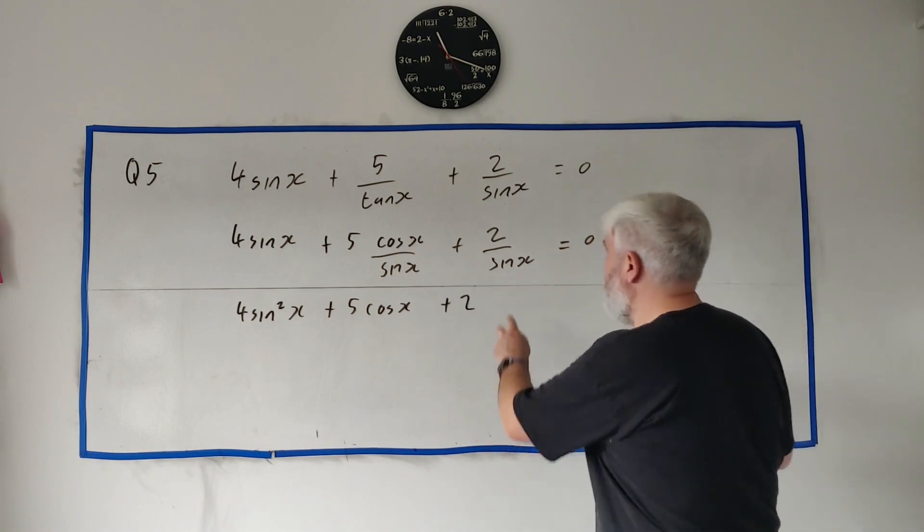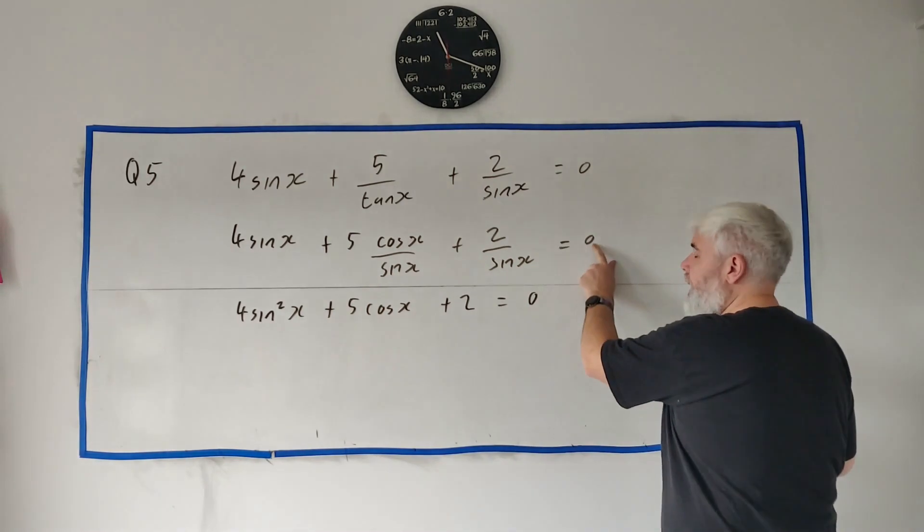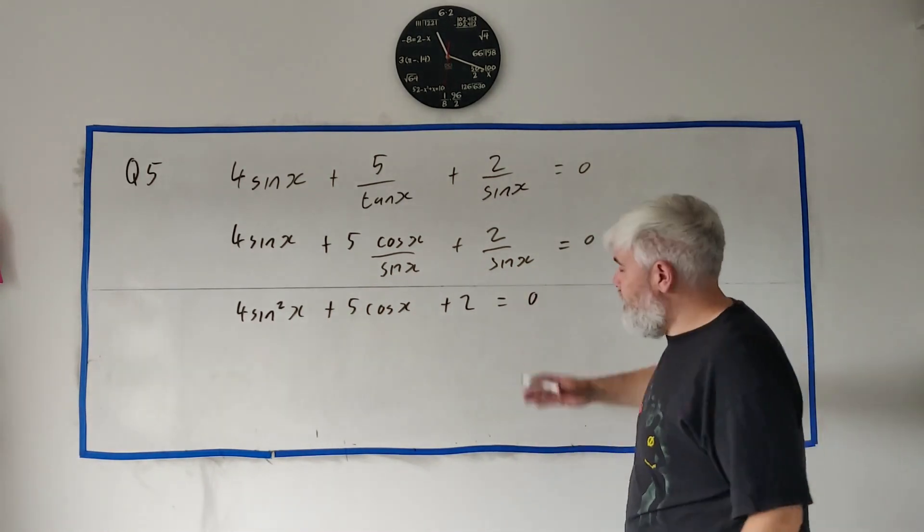Plus two, again sine squared multiplying here and canceling, equals zero. And sine squared multiplying here and anything multiplied by zero is still zero.